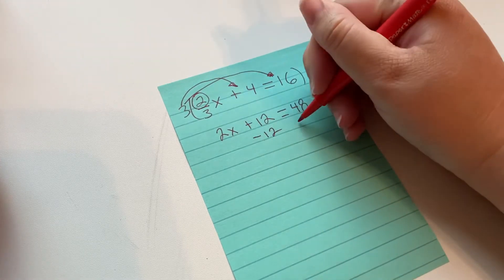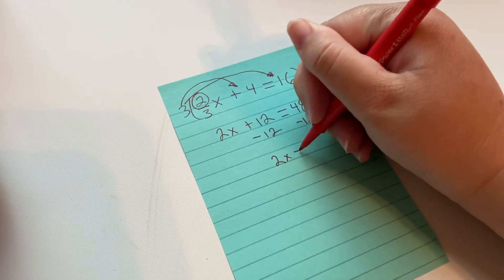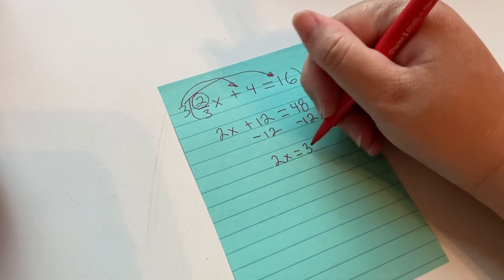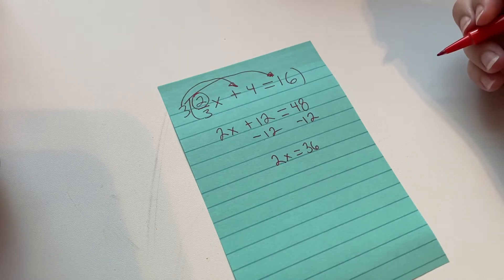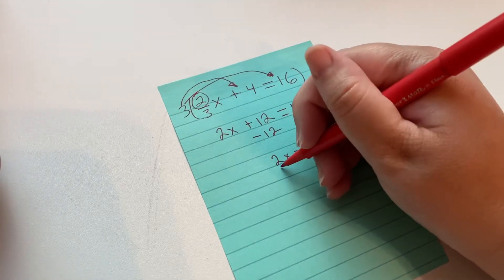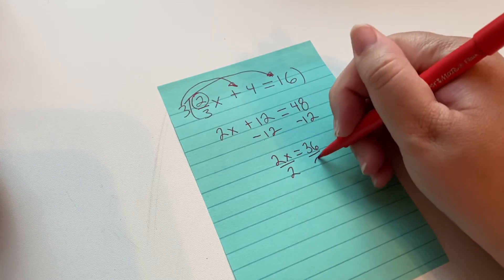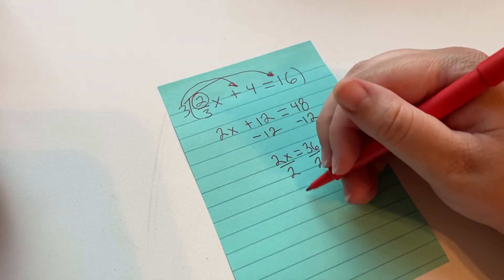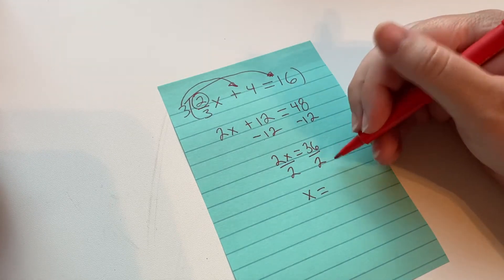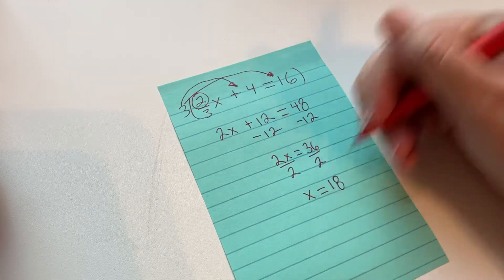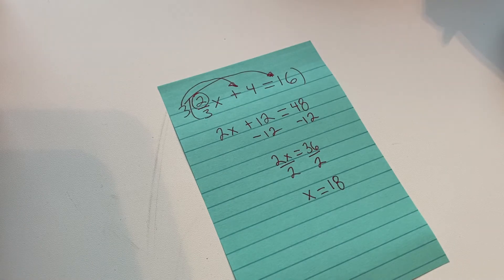We get 2x equals 36. And then we're going to divide both sides by 2. 2 divided by 2 is 1. So we have x left by itself. And then 36 divided by 2 is 18. So that's how that works.